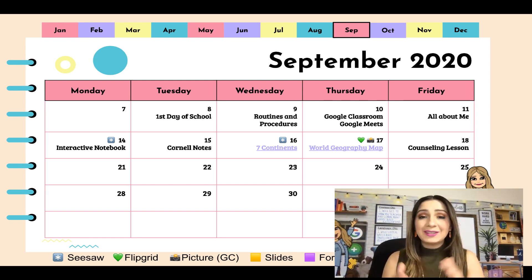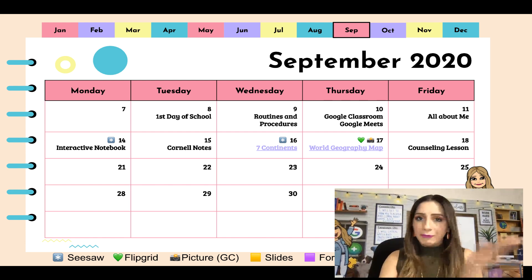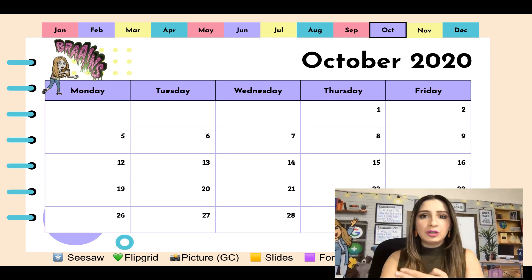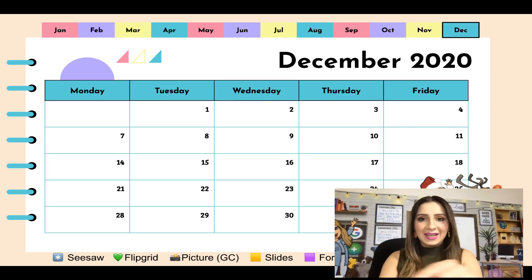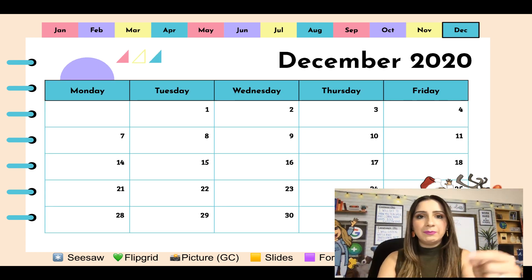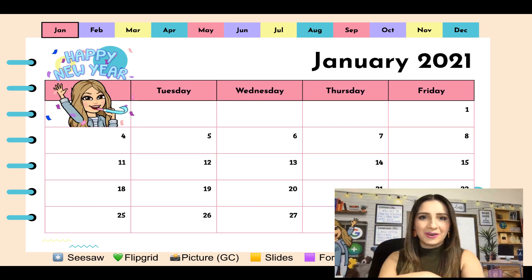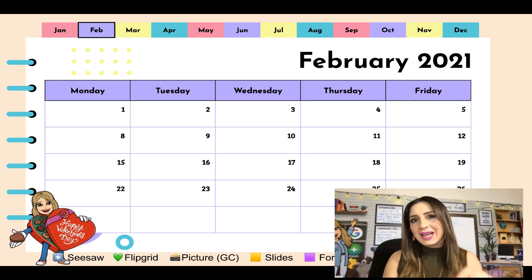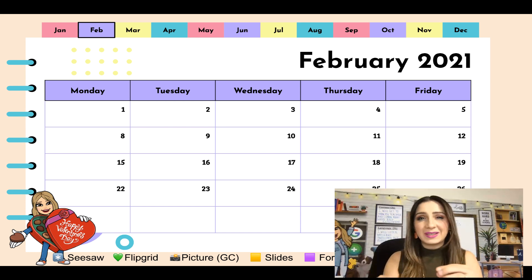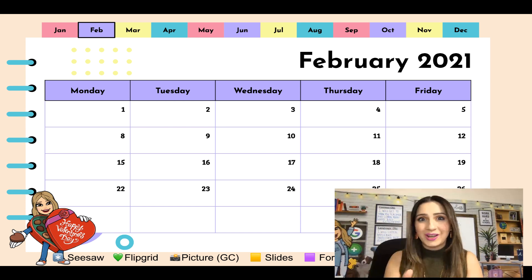I also want to let you know that this covers the full year. There's October, November — I've already gone ahead and customized the days so that they match with the month and the year. I'm going to take you to my Google Drive so you can see how to gather that link and some of the sharing specifications you need to make sure you toggle on.